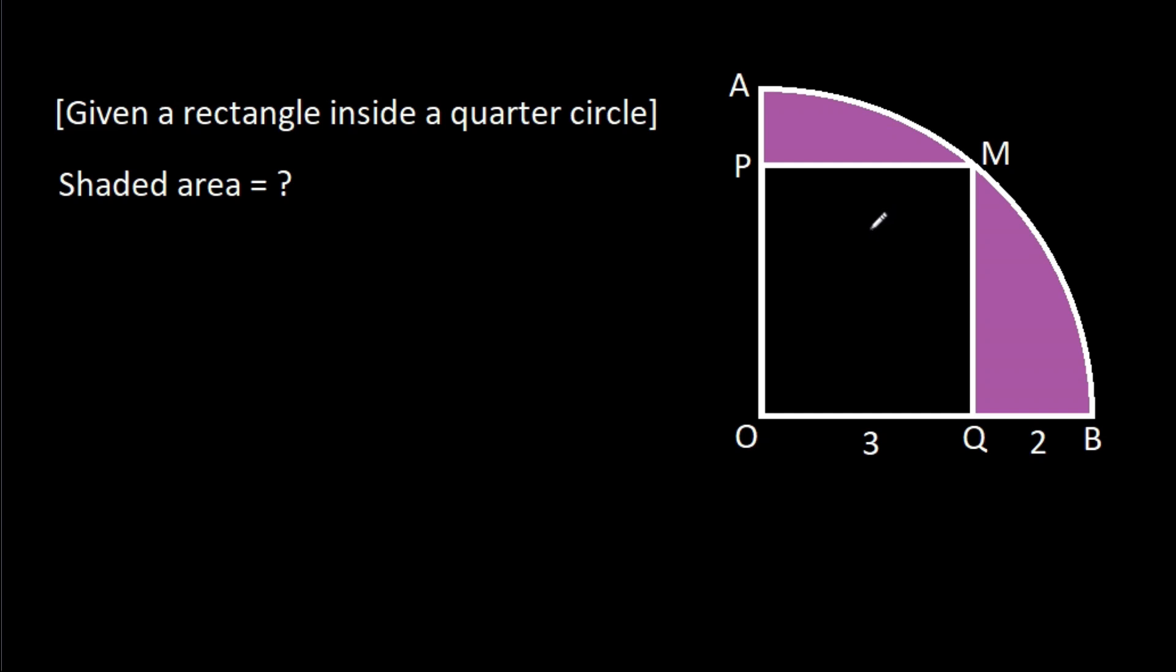In this video, we have been given a rectangle inside a quarter circle where OQ is 3 and BQ is 2. We have to find the shaded area.